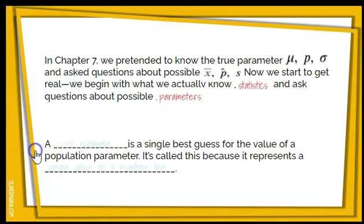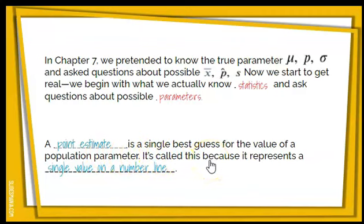We start with what's called a point estimate. It is the single best guess for the value of a population parameter, and it's called this because it represents a single value on a number line. For instance, if I want to know the percent of brunettes at the high school and I take a sample of 50 students, the percent of my sample is my statistic — and that percent is where I start with a confidence interval. It's the point estimate.